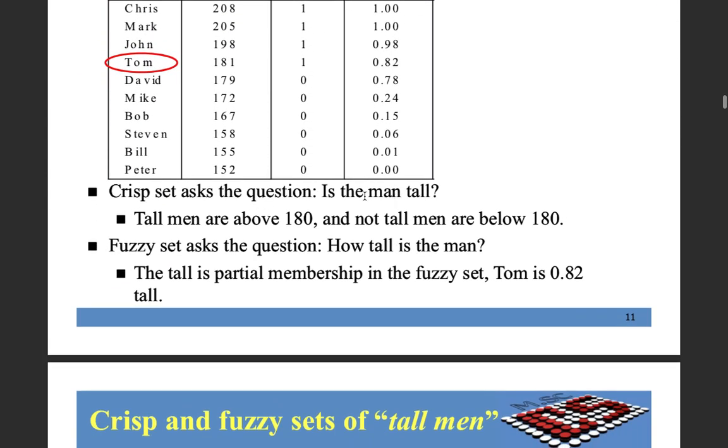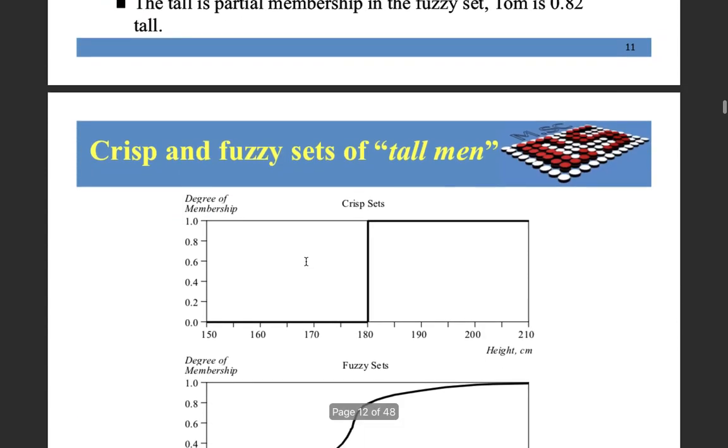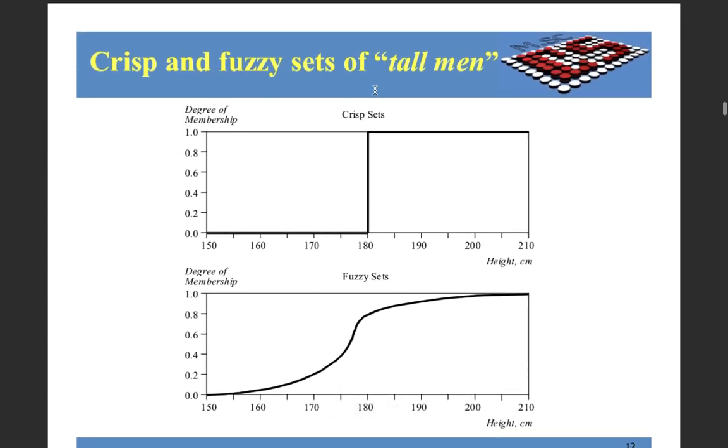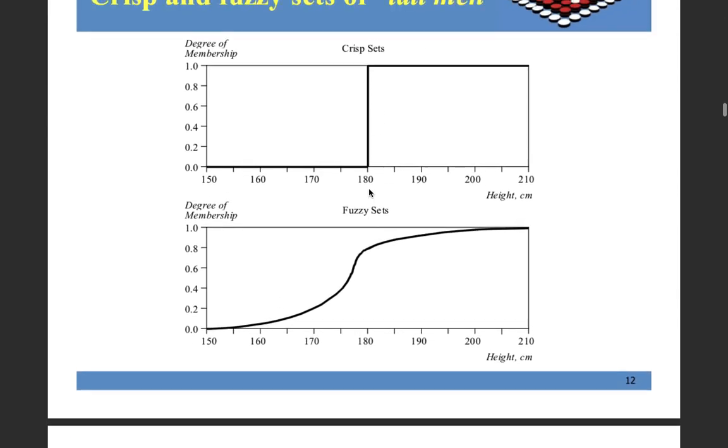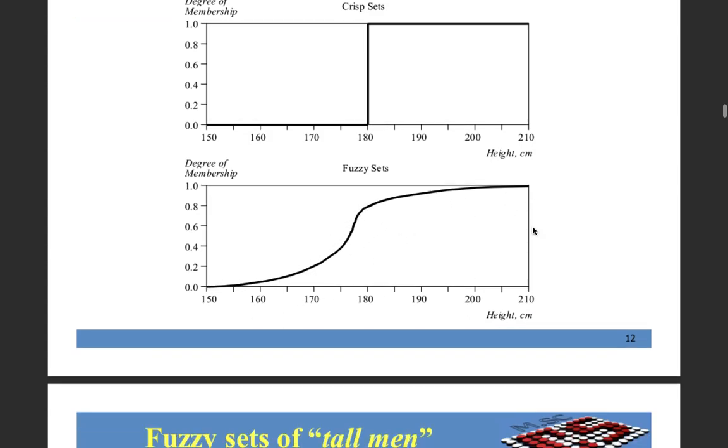So is a man tall? According to crisp, it is crisp interpretation. In the crisp set, it's either 0 or it's either 1, nothing in between. But in fuzzy sets, from 0 to 1, all values are assigned according to degree of membership.